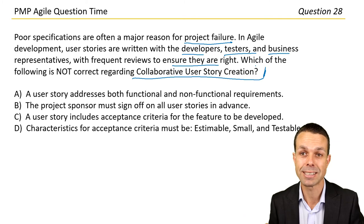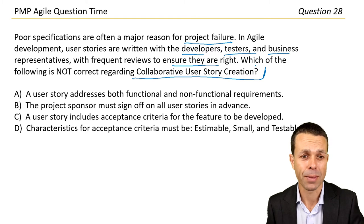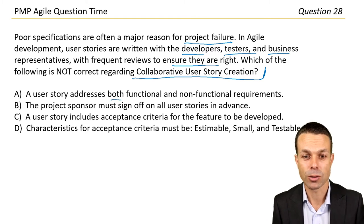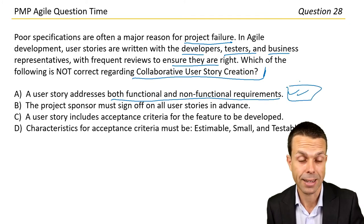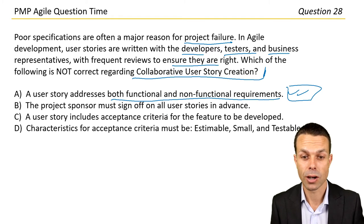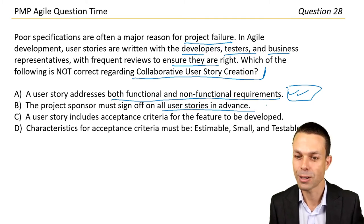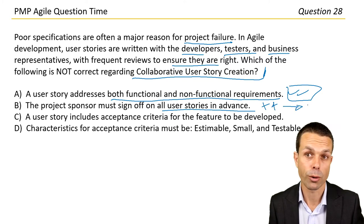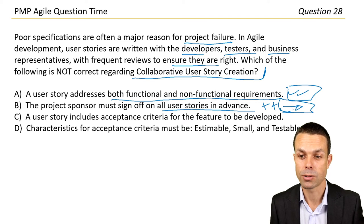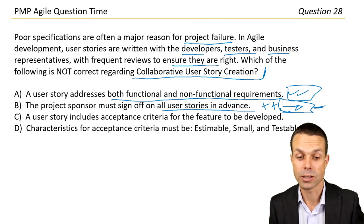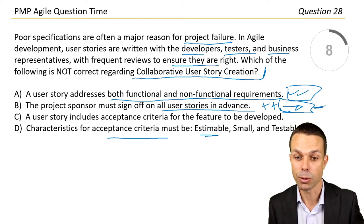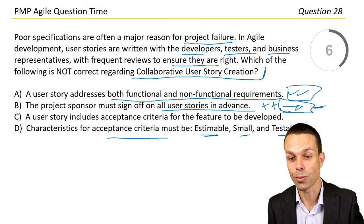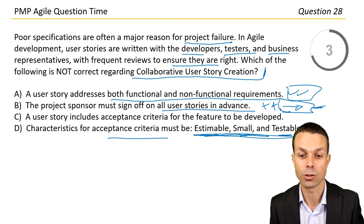The options are: a user story addresses both functional and non-functional requirements; the project sponsor must sign off on all user stories in advance; a user story includes acceptance criteria for the feature; and characteristics for acceptance criteria must be estimable, small, and testable. The project sponsor signing off sounds more like a waterfall approach.